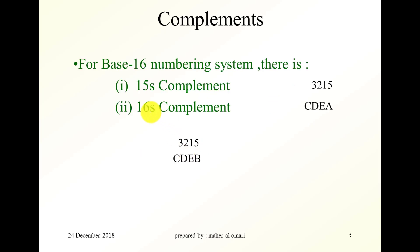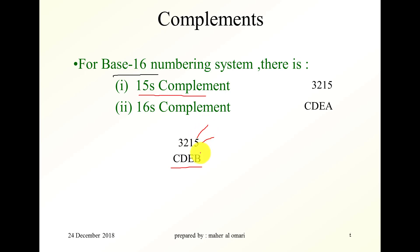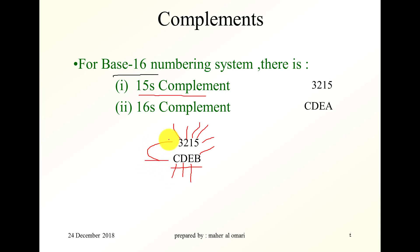Likewise, for the base 16 numbering system, there is something called the 16's complement and something called the 15's complement. This number here has a 16's complement which is this one. Let's find that out. 16 minus 5 is 11; 11 in hexadecimal is B. 15 minus 1 is 14; 14 in hexadecimal is E. 15 minus 2 is 13, which is D. 15 minus 3 is 12, which is C. So this here is the 16's complement of this one.